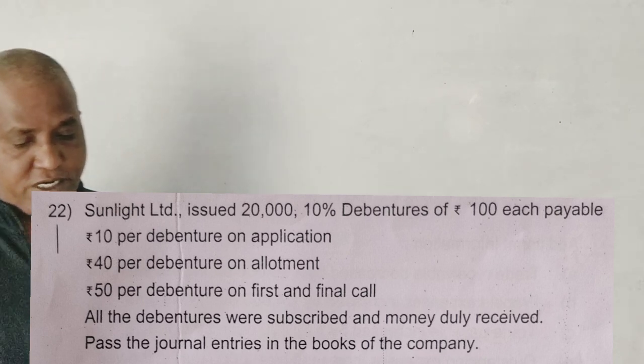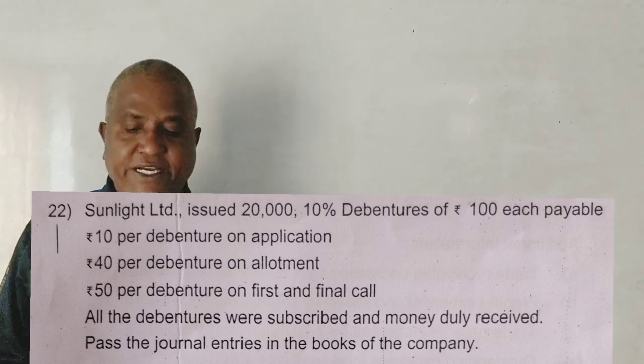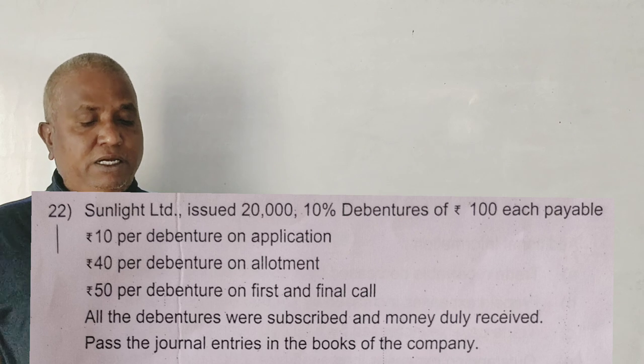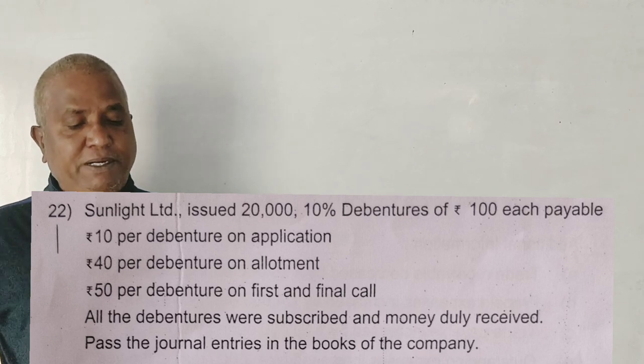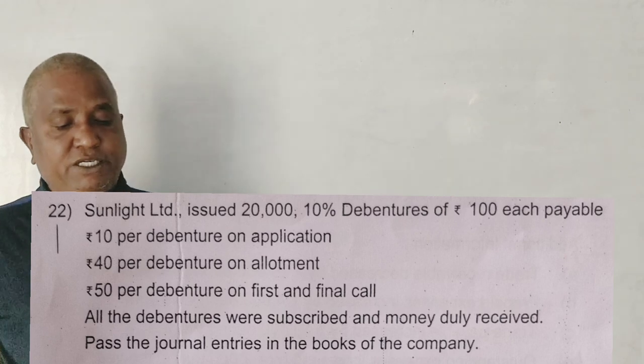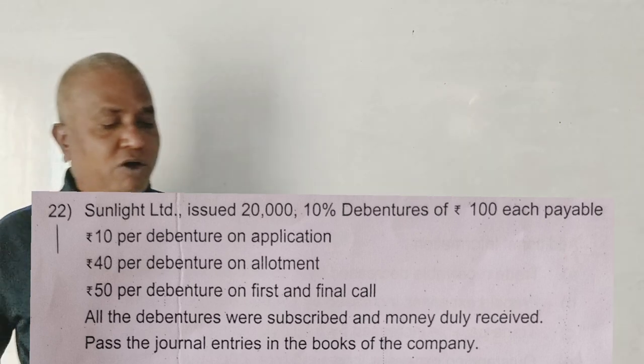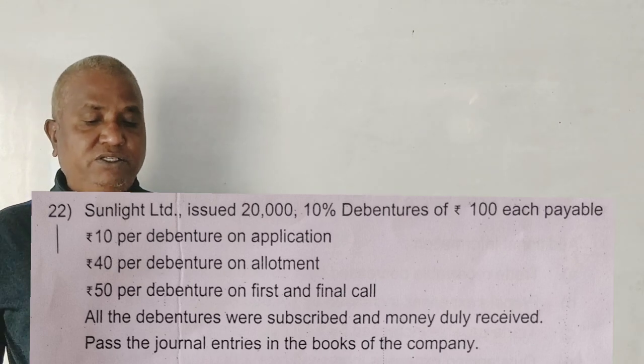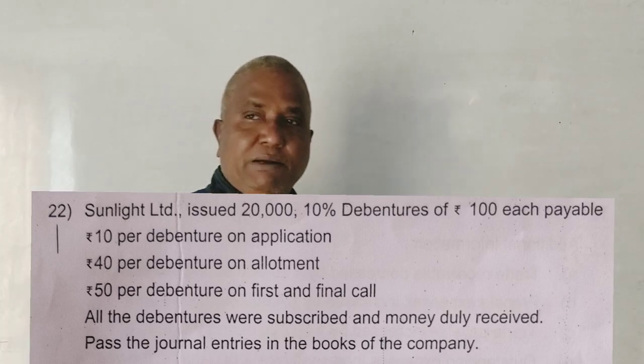First question: Sunlight Limited issue 20,000, 10% Debentures of Rs. 100 each payable. Rs. 10 per Debenture on Application, Rs. 40 Debenture on Allotment, Rs. 50 Debenture on First and Final Call. All the Debentures were subscribed and money we have received. Pass the journal entries in the books of the company.